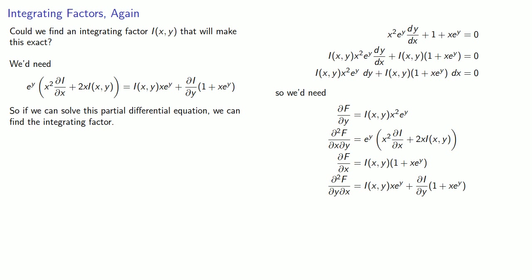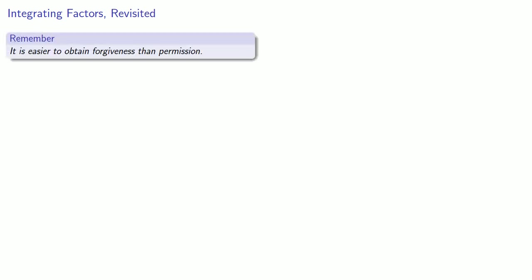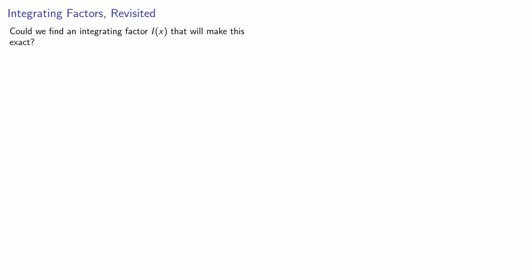The problem is we haven't talked about how to solve partial differential equations, and in general we don't have any way of solving them, so we can't use this method effectively. A useful rule in life and in mathematics is that it's easier to obtain forgiveness than permission — though the important requirement is that it has to work, otherwise you won't get forgiveness either. So rather than assume our integrating factor is a function of both x and y, let's see if we can find an integrating factor that's a function of x only.